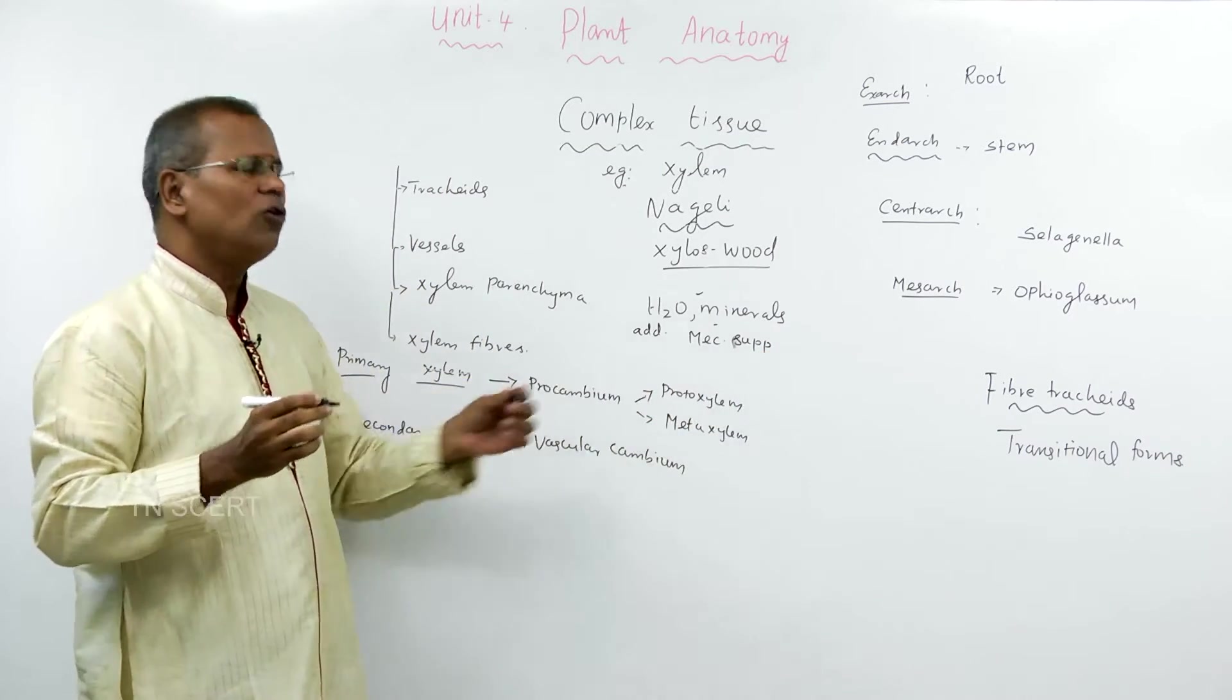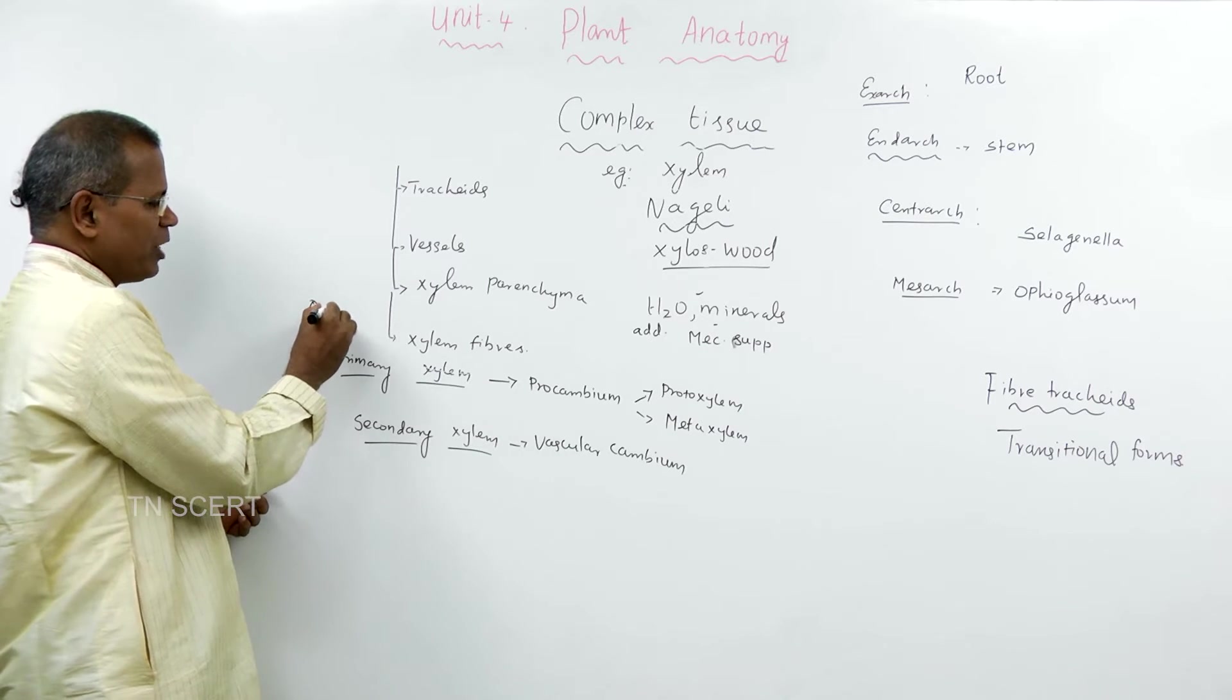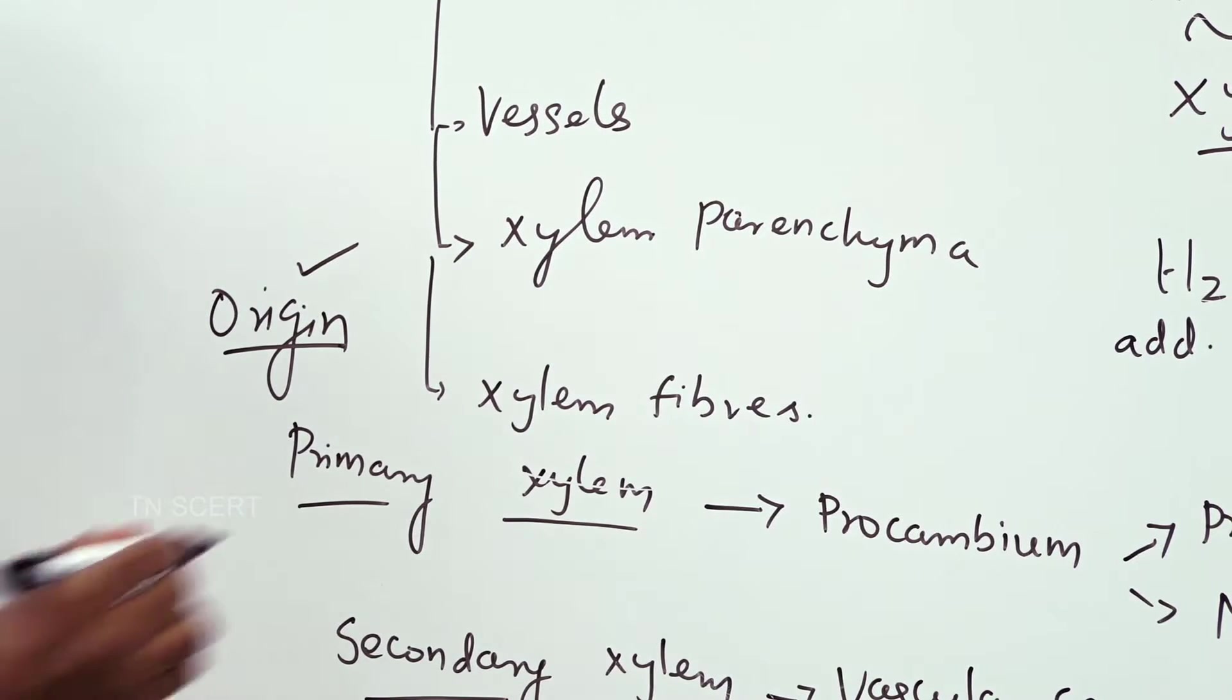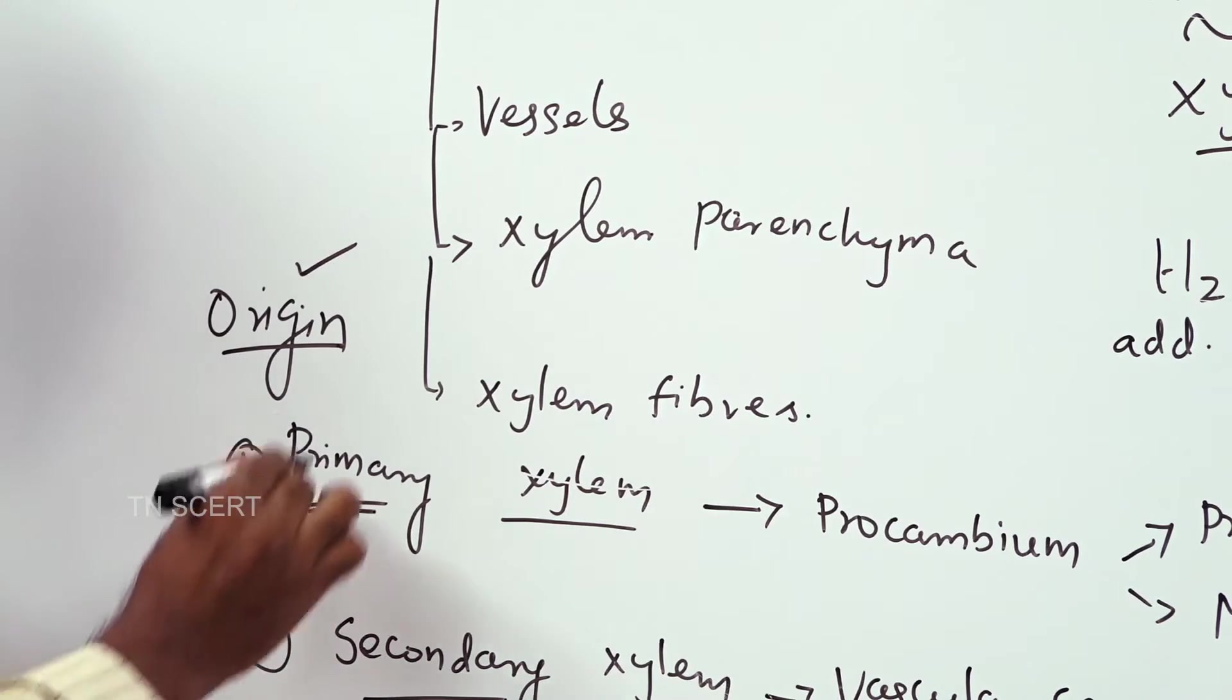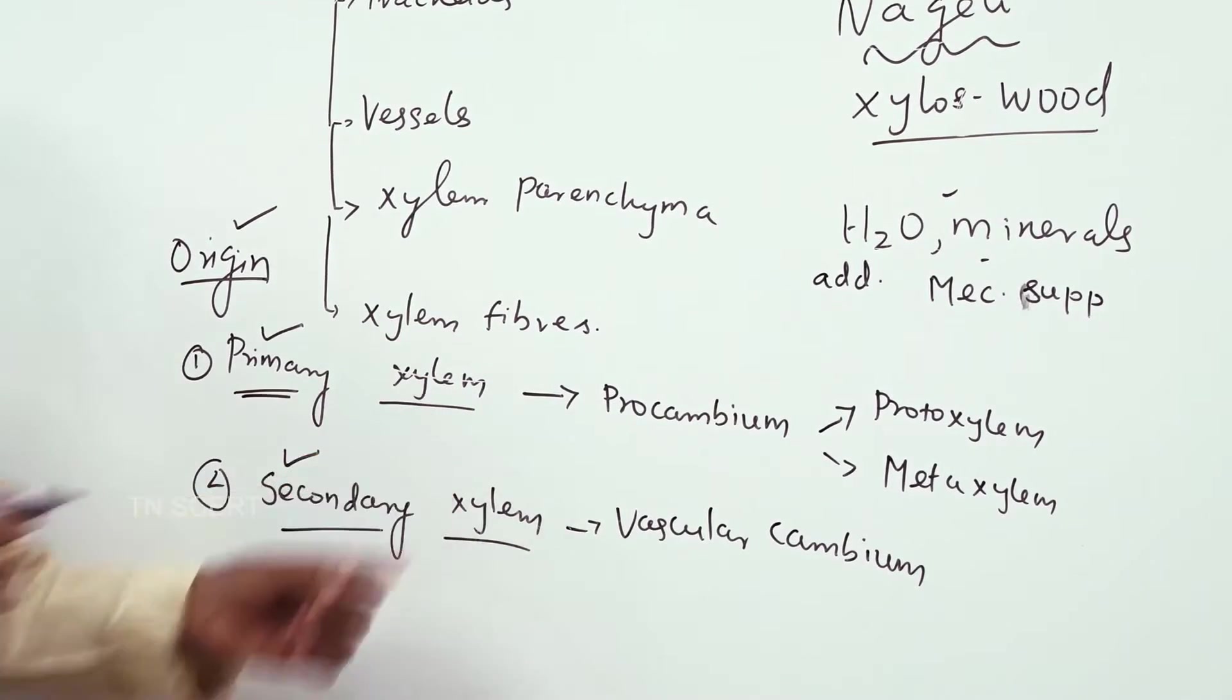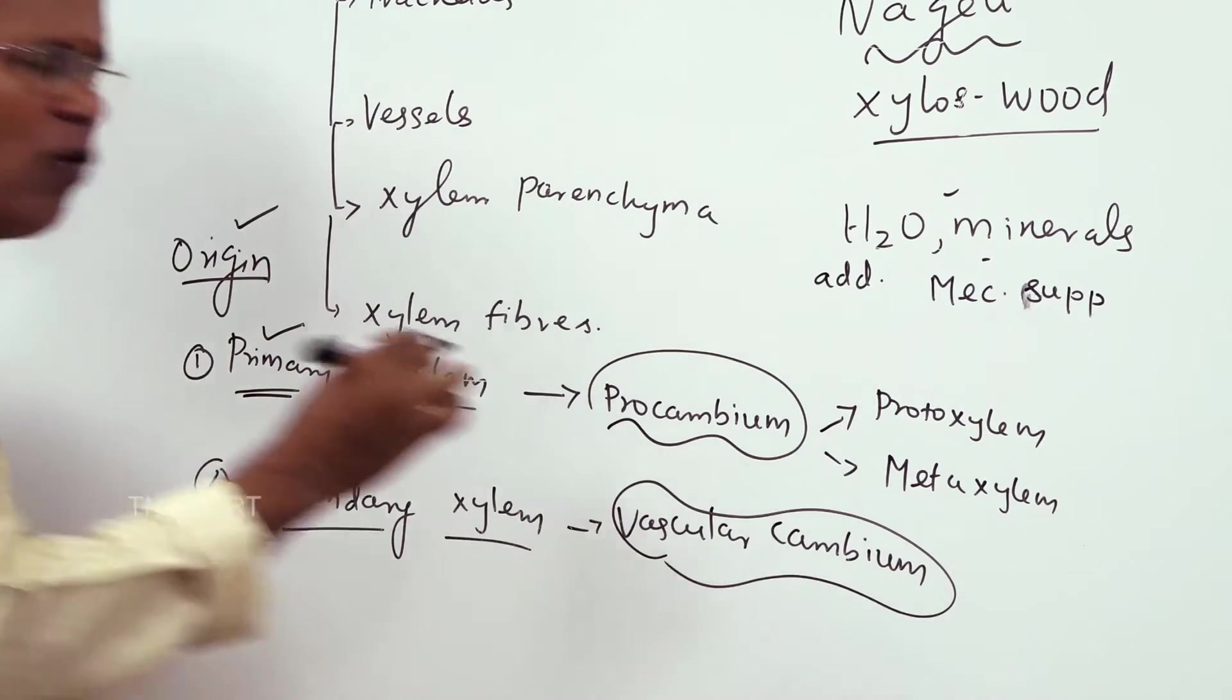On the basis of origin, two types of xylem reported in plants. One is the primary xylem. Second is the secondary xylem. The primary xylem is originated from the procambium and the secondary xylem is originated from the vascular cambium.